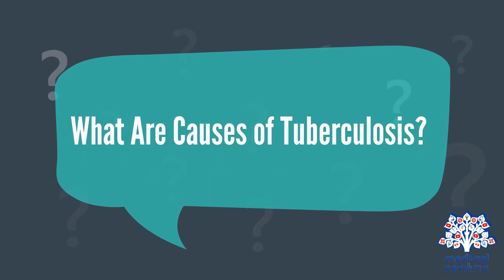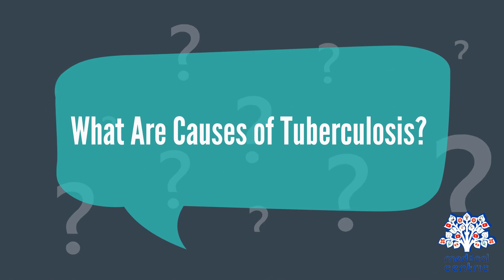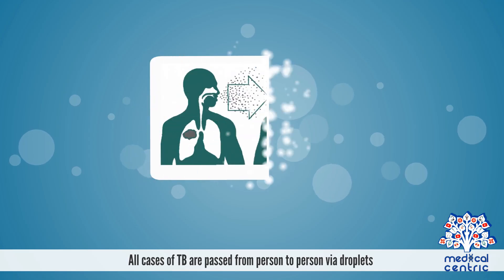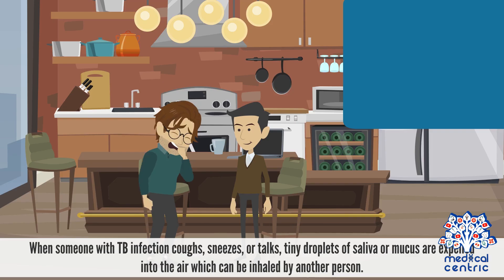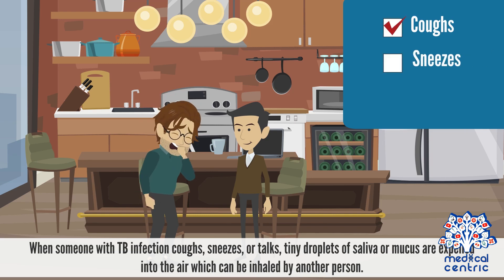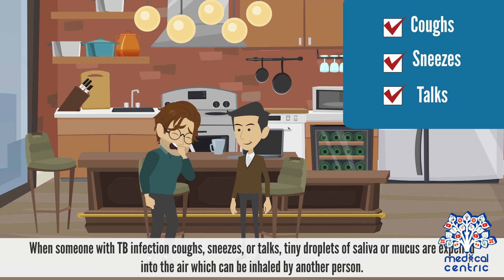What are the causes of tuberculosis? All cases of TB are passed from person to person via droplets. When someone with TB infection coughs, sneezes, or talks, tiny droplets of saliva or mucus are expelled into the air, which can be inhaled by another person.